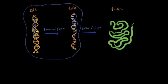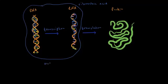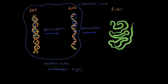Before we talk about transcription, we know a bit about DNA, but what is RNA? RNA stands for ribonucleic acid, and it's very similar to DNA. Some similarities: they're both nucleic acids, meaning they're made up of units called nucleotides. Each nucleotide has a sugar, a phosphate group, and a nitrogen base.